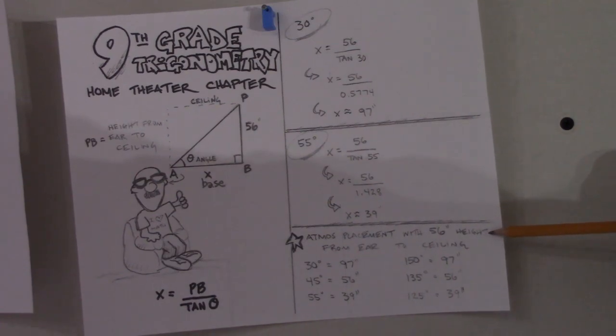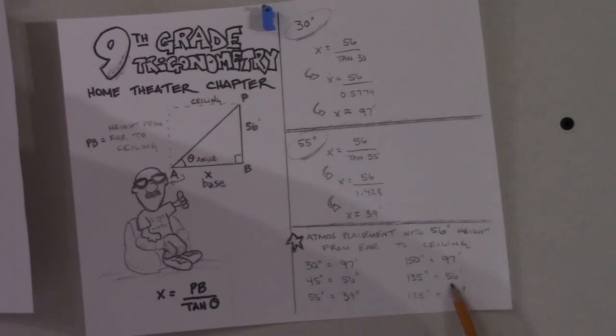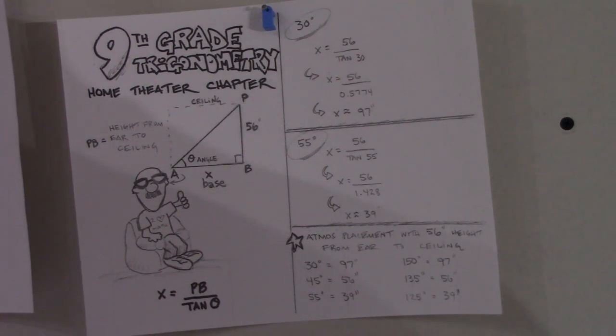I'm not gonna explain this, I did terrible in trigonometry, but as you can see there are some mathematical formulas and a little cheat sheet here. If you have a 56 inch height from your ear to the ceiling, 45 degrees 45 is 56 at 56, 135 is also 56 at 56. That's really easy to do.